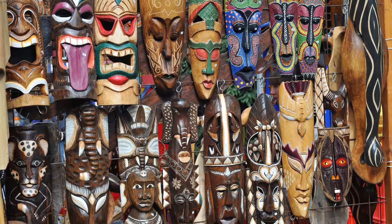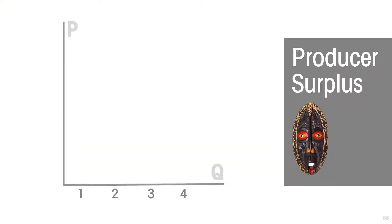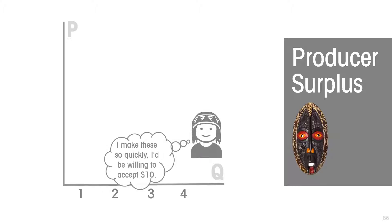Let's use the example of a craft market where various craftspeople show up to sell masks. The most skilled seller, able to make a mask in the shortest time, is willing to accept ten dollars. That means to supply one mask, the height of the supply curve is ten dollars — that is what at least one mask seller is willing to accept.